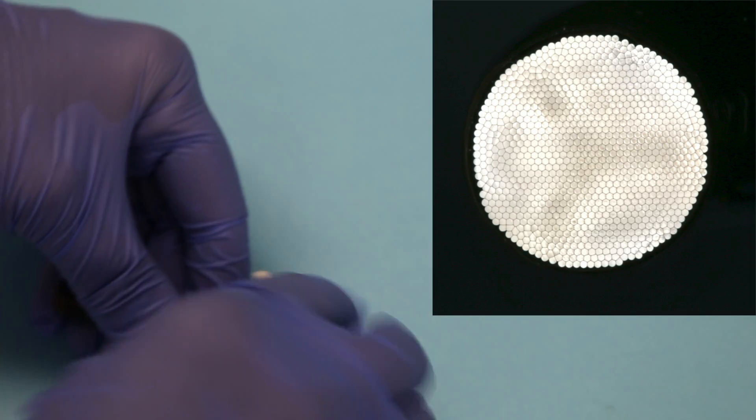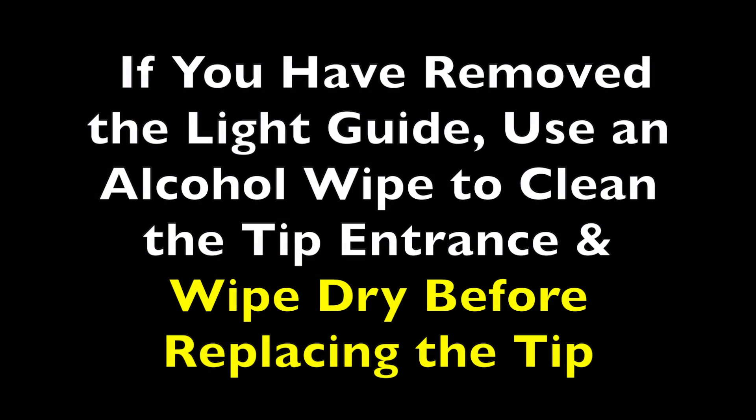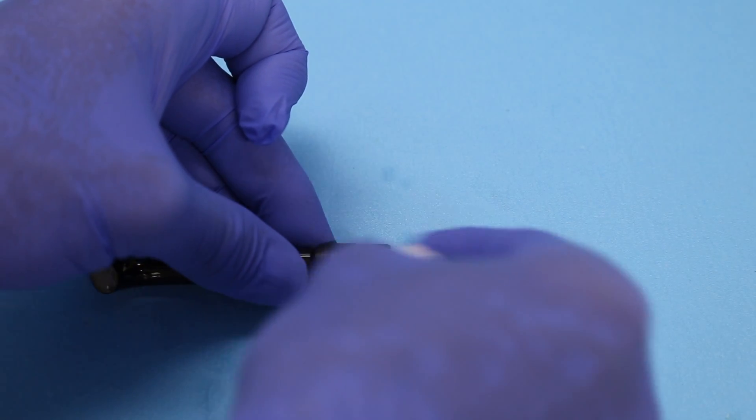Here we can see it's nice and clean. All the composite was removed. You should use an alcohol wipe to clean the entrance of the light guide, that's where the light goes in, and remove any debris that's there.